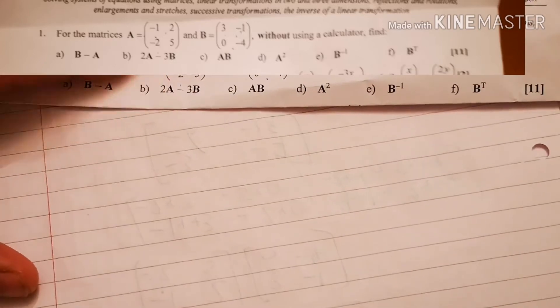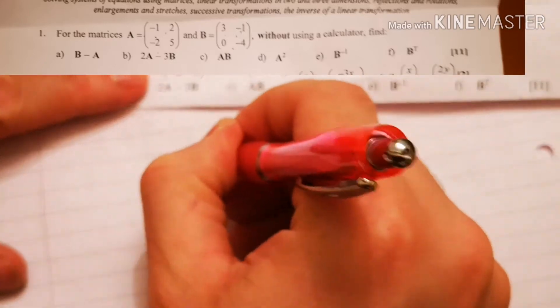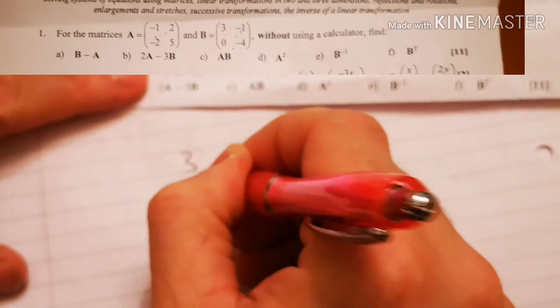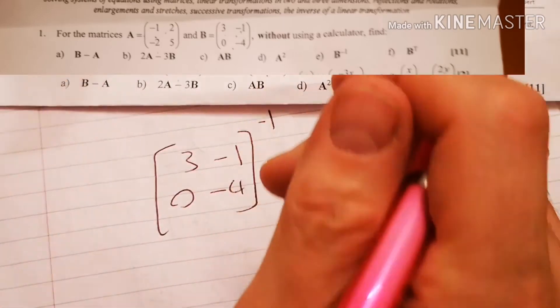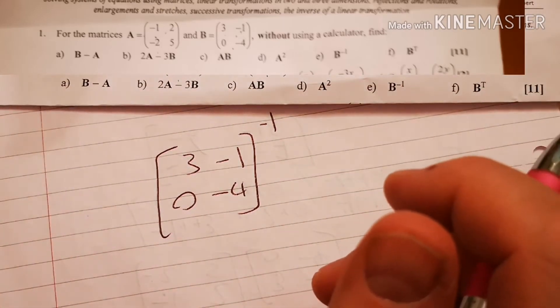Next one is B to the power of minus 1. Let's read. 3, minus 1, 0, minus 4. Okay. Now minus 1.